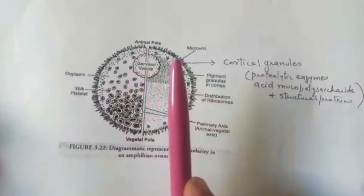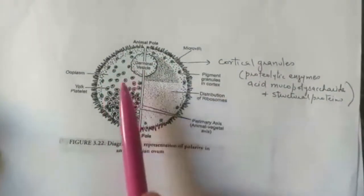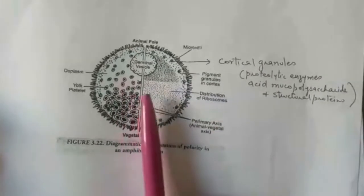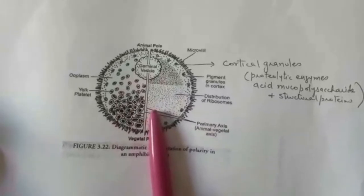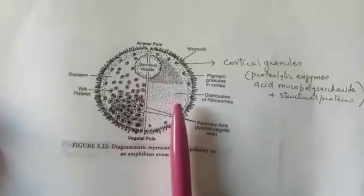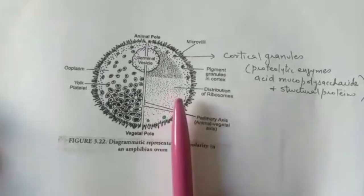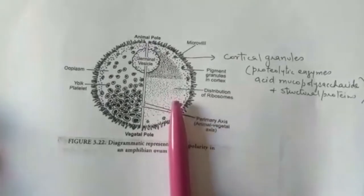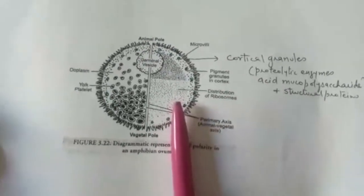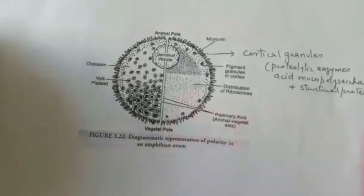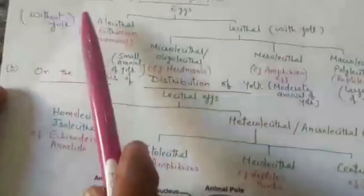The mature unfertilized egg is inert or inactive because all cellular mechanisms are suspended. Even its messenger RNA is masked — meaning it is not ready for translation and cannot synthesize proteins. Only after fertilization does the RNA become active and protein synthesis begin. Now we will study the different types of eggs.